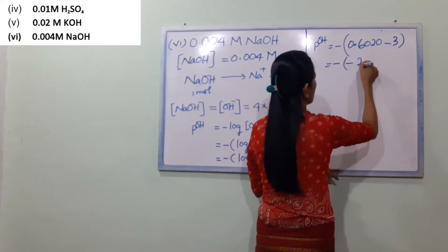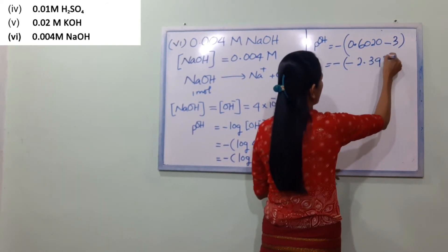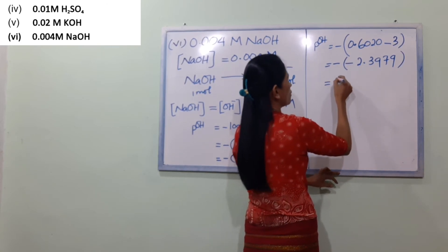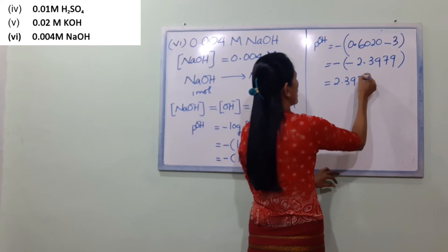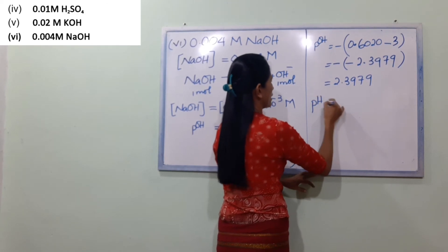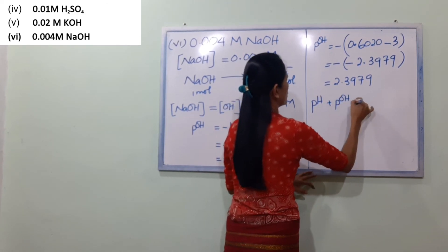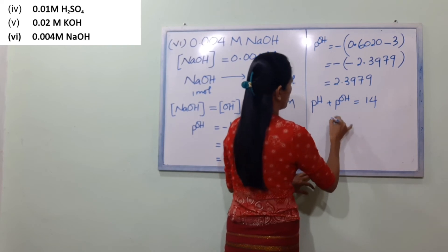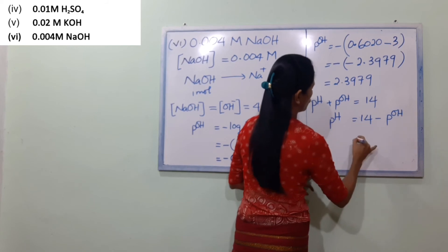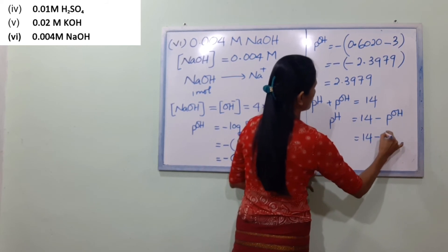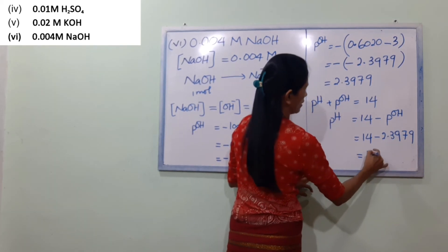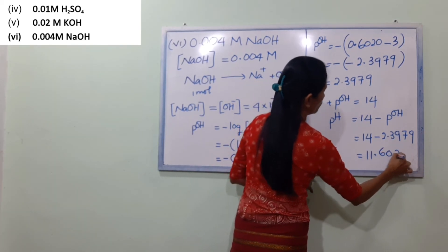pOH equals 2.3979. Then pH equals 14 minus pOH, equals 14 minus 2.3979, equals 11.4021 (approximately 11.60).